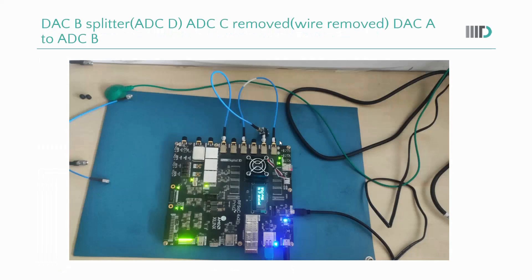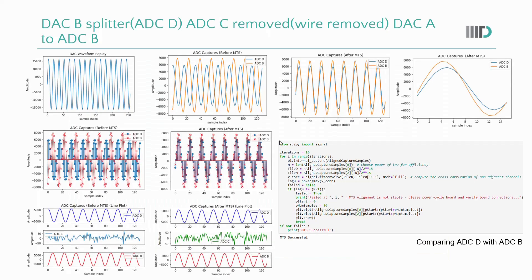In this configuration, we are keeping one end of the splitter empty and only using two ADCs: ADCB and ADCD. As you can see in the plot, before MTS, ADCB and ADCD are misaligned. ADCD, coming from the splitter, goes to 6000, while ADCB, directly from the DAC, goes to 8000. After MTS, they get aligned, and we have verified that MTS is successful.